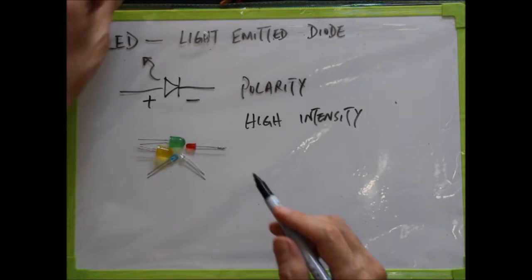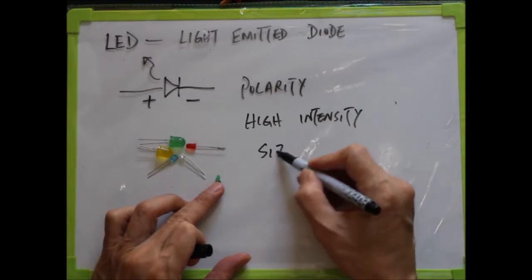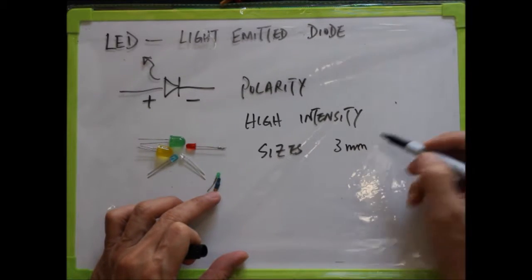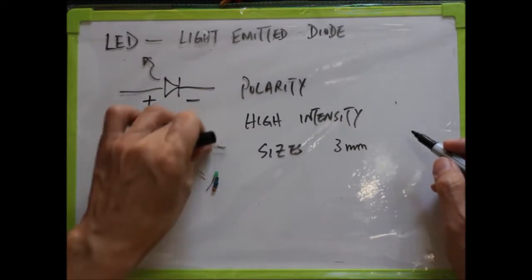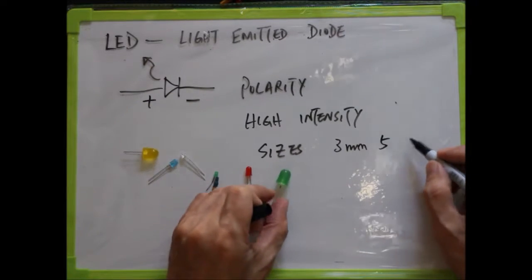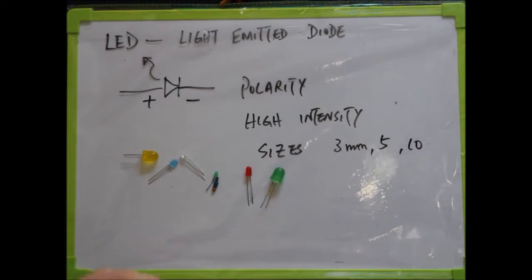About the size of LEDs: the smaller one like this is 3mm. The next size is 5mm, and then the big one like this is 10mm. Depends on your usage, so you choose the size and color you want.